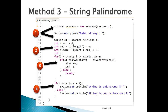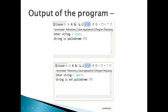Step 4: the final check compares the value of i with middle + 1. If they are equal, string s1 is a palindrome; otherwise s1 is not a palindrome. Running the program: entering 'stats' prints 'String is a palindrome'; entering 'sports' prints 'String is not a palindrome'.